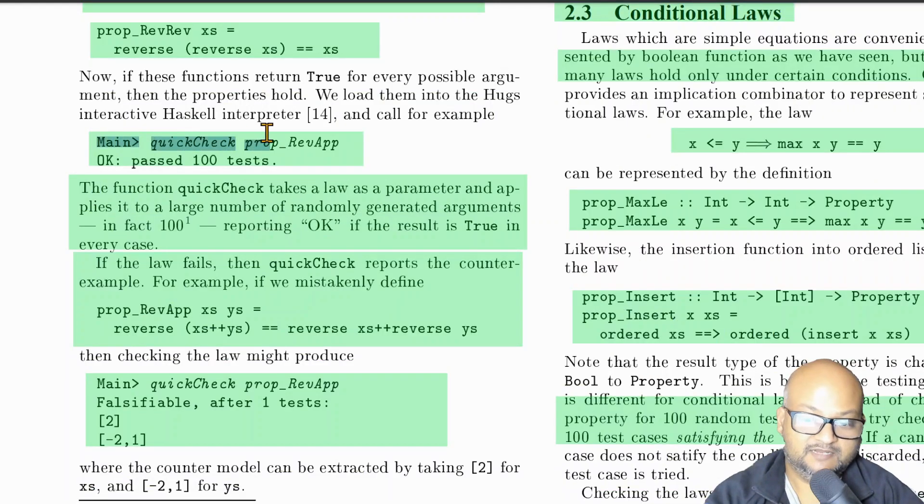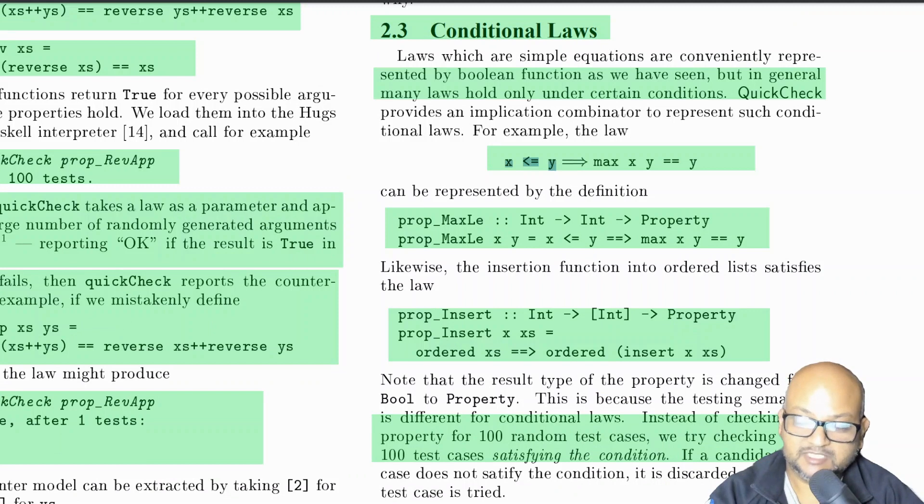You then invoke QuickCheck on each of those properties. And QuickCheck generates a large number of randomly generated inputs. The default is 100 and tells you whether they all passed or not. If one of the tests fails, it gives you a concrete counterexample of that failure.